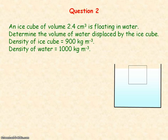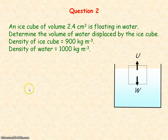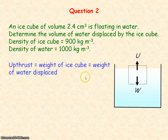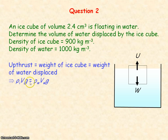Question two. The forces acting on the ice cube are the weight of the ice cube and the upthrust. As the ice cube is floating, the upthrust will equal the weight of the ice cube. From Archimedes principle, the upthrust is equal to the weight of the water displaced, so the weight of the ice cube will equal the weight of the water displaced.